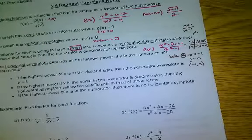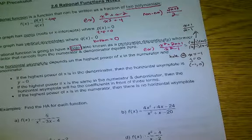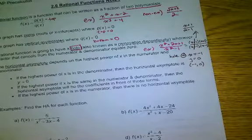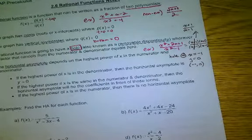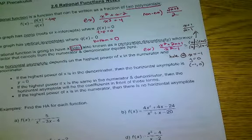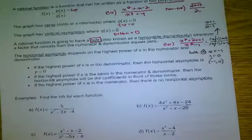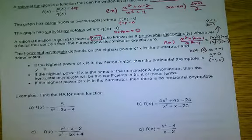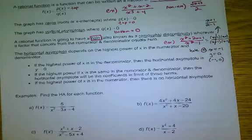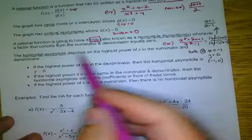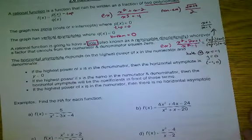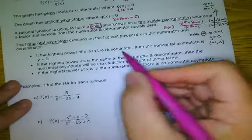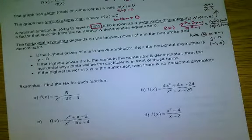Now for horizontal asymptotes — this is reviewed from last year but can get confusing, and it's super important in calculus. Horizontal asymptotes depend on the highest power in the numerator and denominator. Rule 1: if the highest power of x is in the denominator, then you're going to have a horizontal asymptote at y equals 0. I don't want you to just memorize this — I want you to understand it.